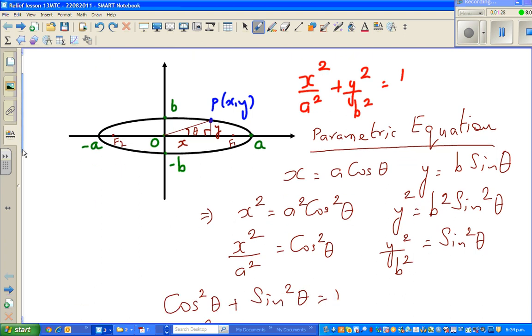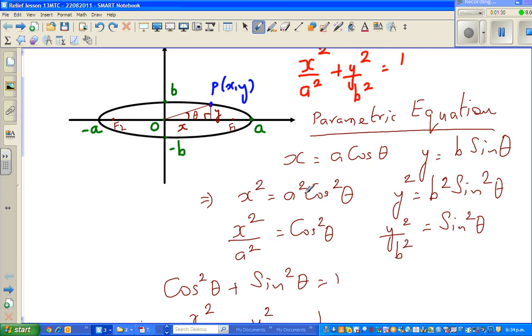And in the next step, if you divide both sides by a squared, you get x squared over a squared is equal to cos squared and y squared over b squared is sin squared.